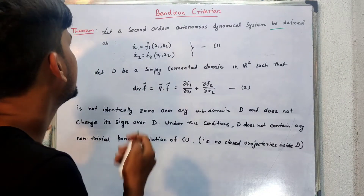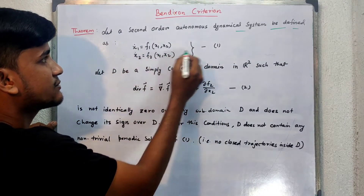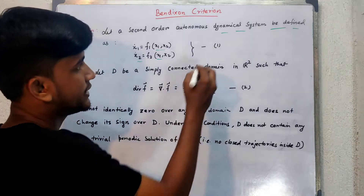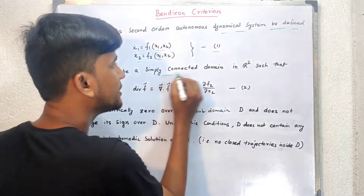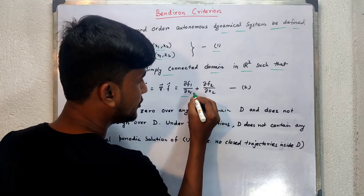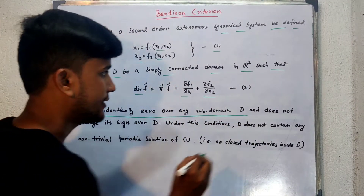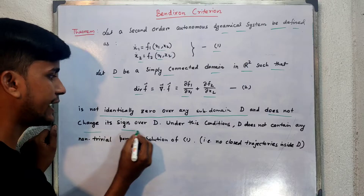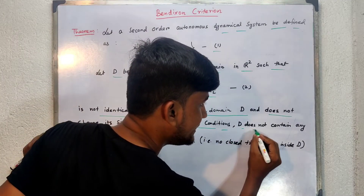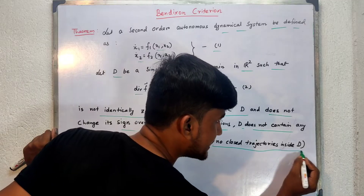The Bendixson criteria says — and this is a theorem — let a second order autonomous dynamical system be defined: X-dot equal to F1(X1, X2) and X2-dot equal to F2(X1, X2). This is system (1). Let D be a simply connected domain in R², such that the divergence of F — that is, ∂F1/∂X1 + ∂F2/∂X2 — is not identically zero over any subdomain of D, and does not change its sign over D. Under these conditions, D does not contain any non-trivial periodic solution of (1); that is, there are no closed trajectories inside D.